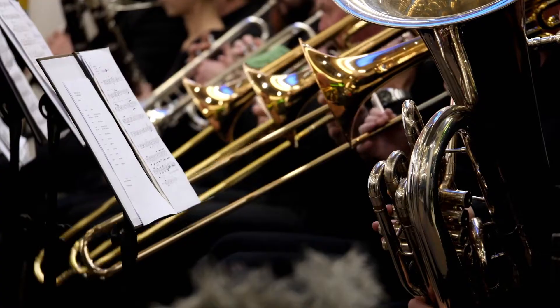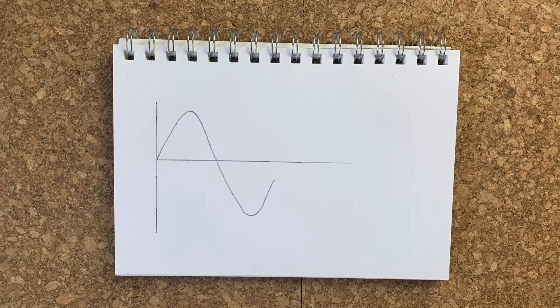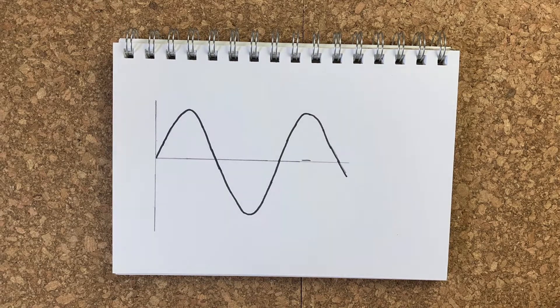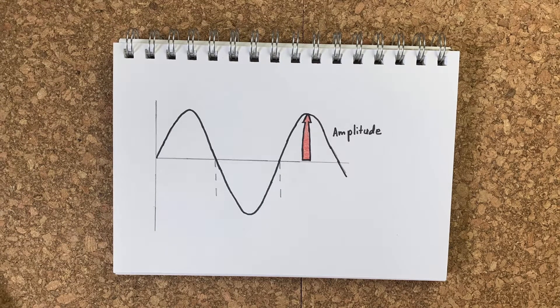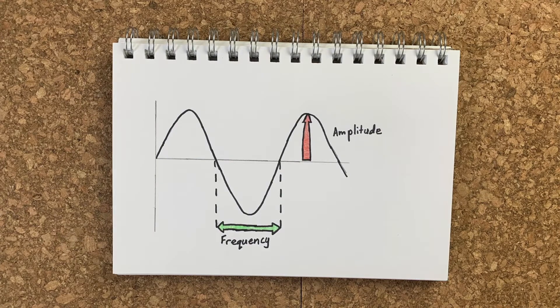Sound is vibrations. All musical instruments create vibrations in some way to create sound, and we create vibrations with our vocal cords. We shape those vibrations with our mouth, tongue, and teeth to create words. There are two ways we describe the qualities of a vibration: amplitude, which is the height or strength of a vibration, and frequency, which is how often it vibrates — the speed at which it vibrates.